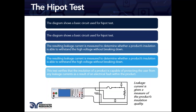Looking at the basic circuit diagram on the slide, the product under test is on the right and the Hypot tester on the left. The result of a Hypot test is always measured in terms of leakage current — in milliamps or microamps, depending on whether it's an AC or DC Hypot test. The leakage current determines whether the product's insulation can withstand high voltage without breaking down.